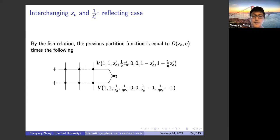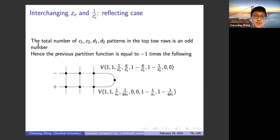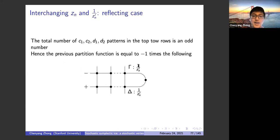Using the fish relation, the partition function equals a constant times the new cap configuration. We then change plus-minus spins again, change Boltzmann weights back, and restore the top row to something similar to gamma ice. After all these changes, we obtain a system where the top row has gamma ice with 1/z_n' and the bottom row has delta ice with 1/z_n'. This achieves the goal of changing z_n to 1/z_n', yielding the functional equation for this interchange.